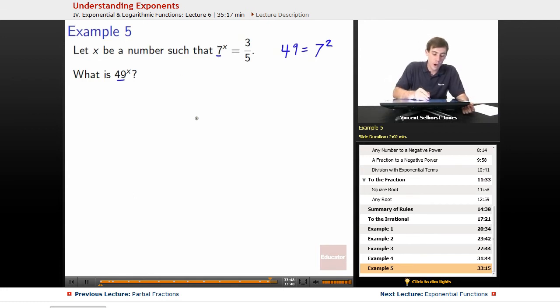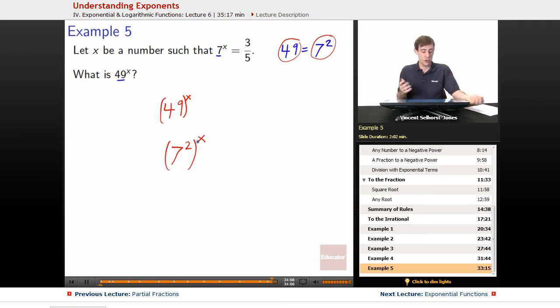We can now apply that and we can go 49 to the x. Well, we know that 49 is equal to 7 squared. So we can just substitute that out. So 49, put it in parentheses, to the x is the same thing as 7 squared to the x, right? Nothing stopping you from doing a substitution like that. So 7 squared to the x.